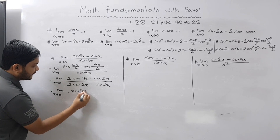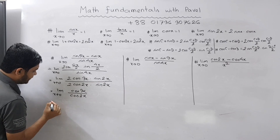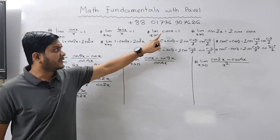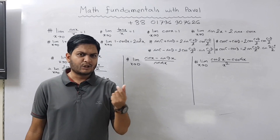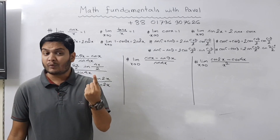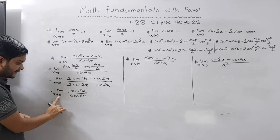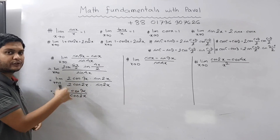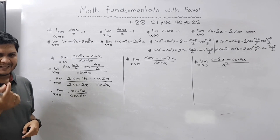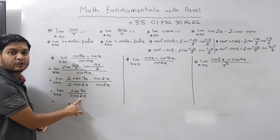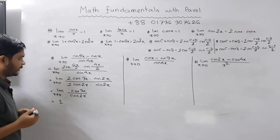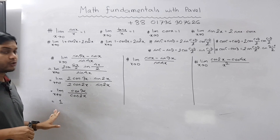We are left with cos(3x) divided by cos(2x). We know that when x tends to 0, cos(x) tends to 1. So cos(3x) becomes cos(0) which is 1, and cos(2x) becomes cos(0) which is also 1. Therefore 1 divided by 1 gives us 1. The answer for this problem is 1.